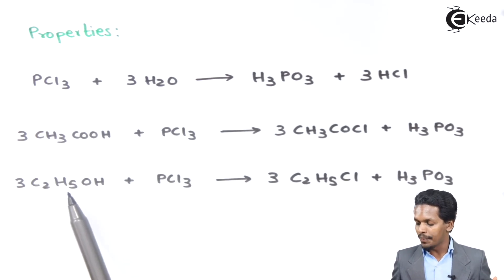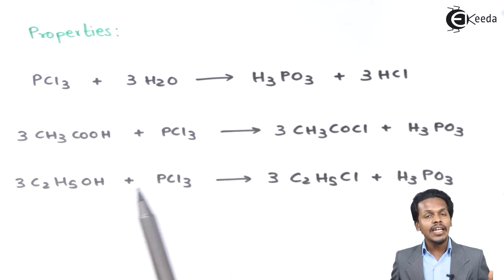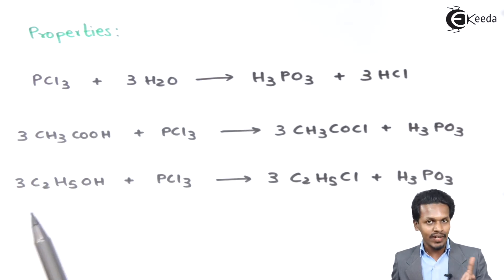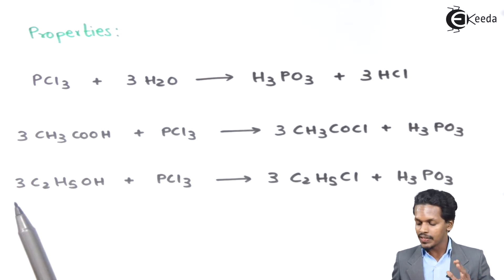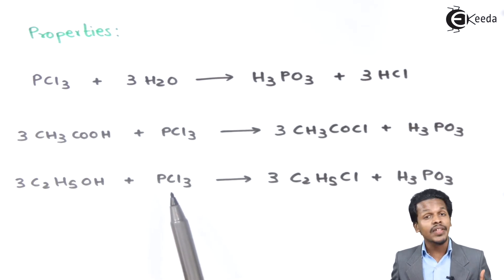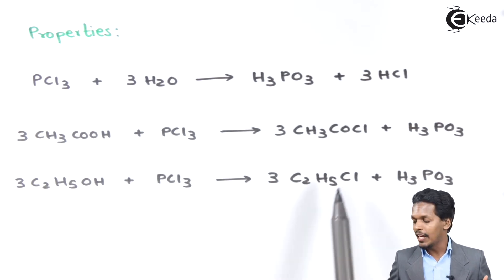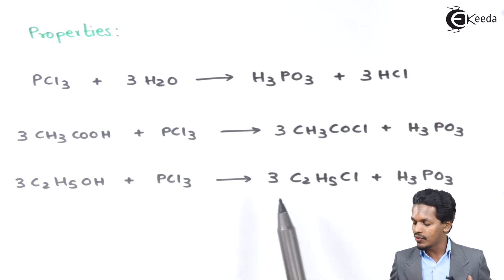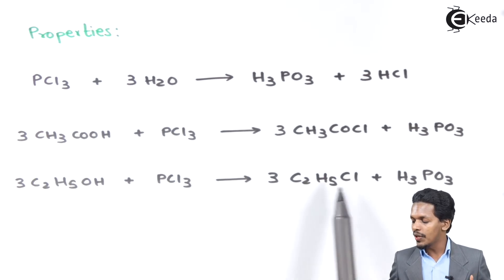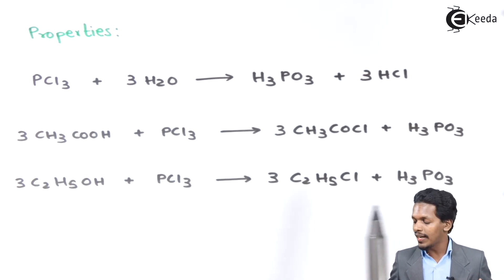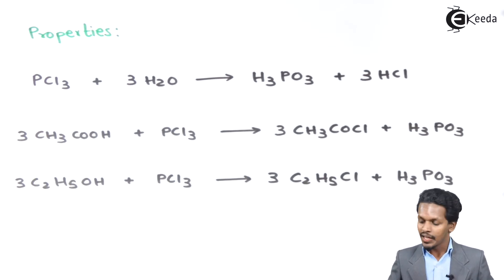If PCl3 is reacted with alcohol — taking the example of 3 moles of C2H5OH treated with PCl3 — the product obtained is 3 moles of C2H5Cl, that is chloroethane, along with phosphorus acid.